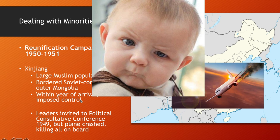Their replacements, sent directly from communist headquarters in Beijing, were basically puppet leaders, ensuring that centralized communist control was exerted on Xinjiang in this reunification campaign.